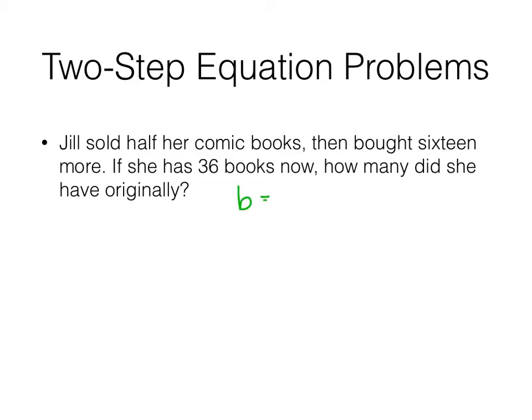She sold half. So she cut her amount she had in half. Then she bought 16. So she got 16 more and she ended up with 36. So it's like we're telling a story with the equation. She had her number of comic books. I'm going to switch back to something else because the lightsaber is kind of cool. But after a while, the song gets annoying. Comic books, she got rid of half. So she cut what she had in half. Then she bought 16 more and now she has 36.